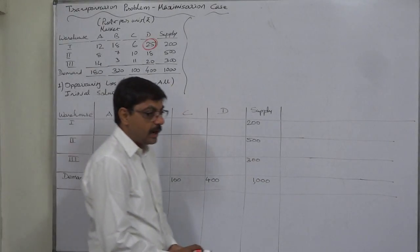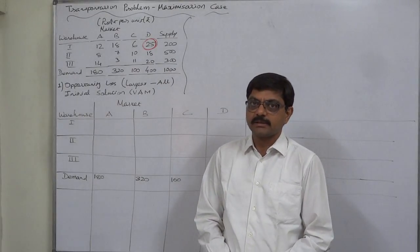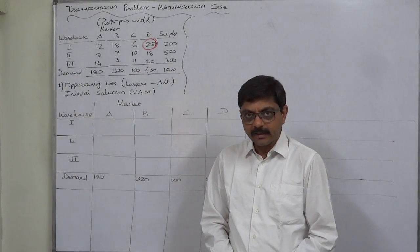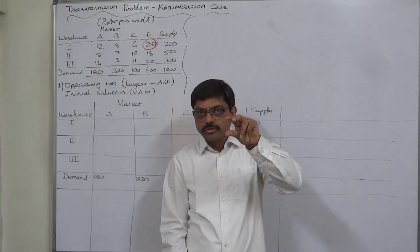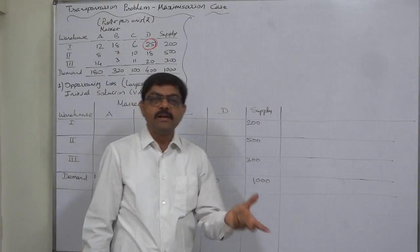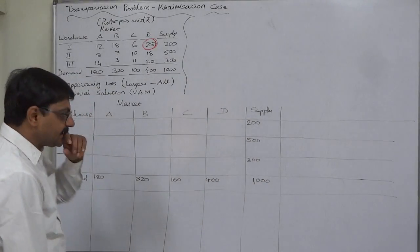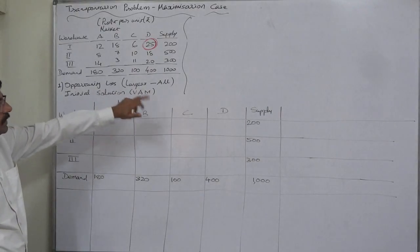Now the question is how to convert a maximization transportation problem into a minimization transportation problem. We have to introduce a small step in the beginning of the solution which will convert the maximization problem into a minimization problem, and that is known as preparing an opportunity loss table.